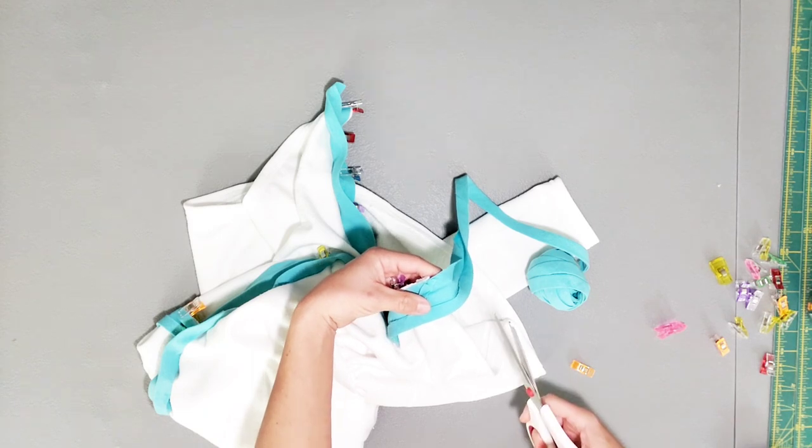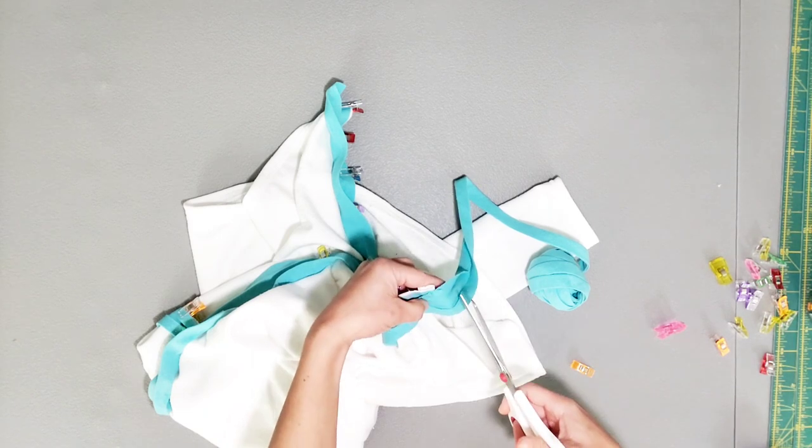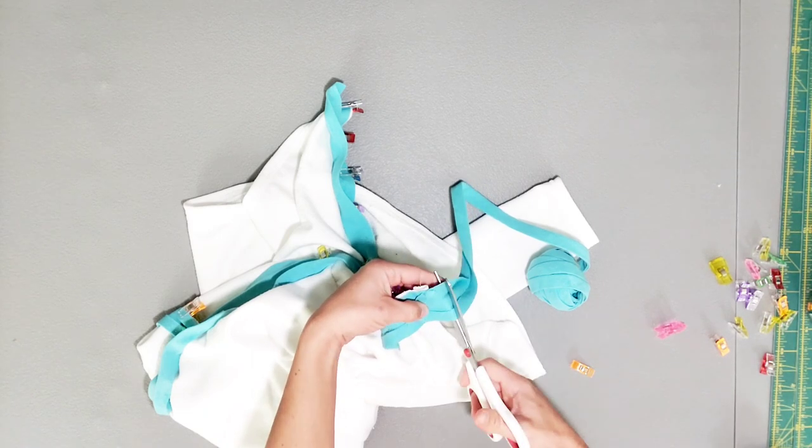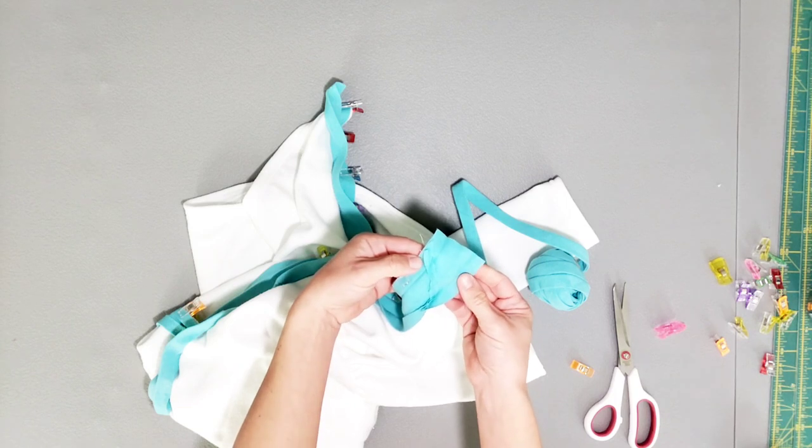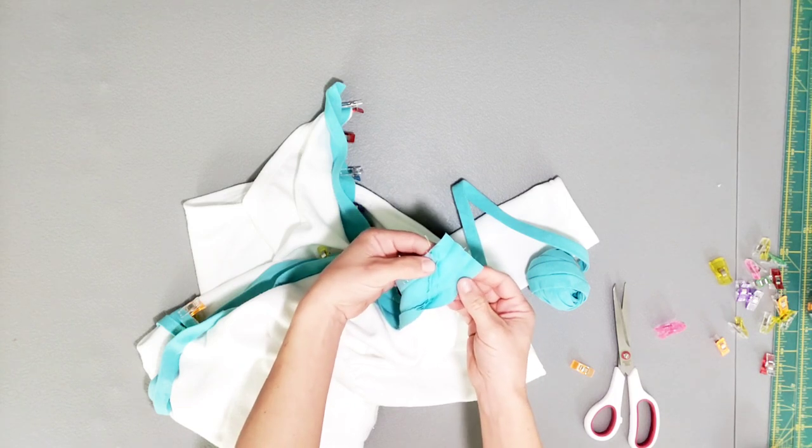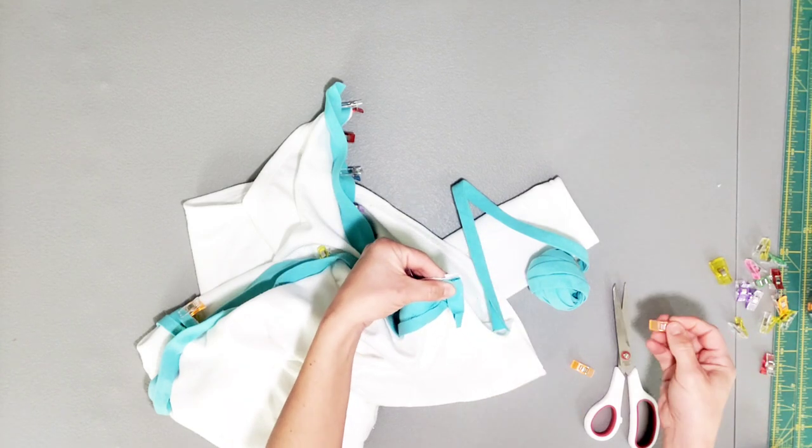When you get to the end, snip off your bias tape a half inch past the hem. Open up your bias tape and fold it over again half an inch. And clip.